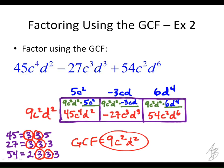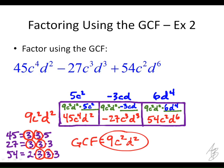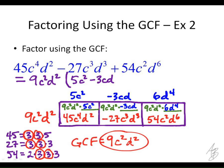Now I have all the information to write the answer. I'll put an equal sign to show it equals the expression above. What do I write first? 9C squared D squared — the GCF always goes first. Then in parentheses: 5C squared, minus 3CD, plus 6D to the 4th. And that's your answer.